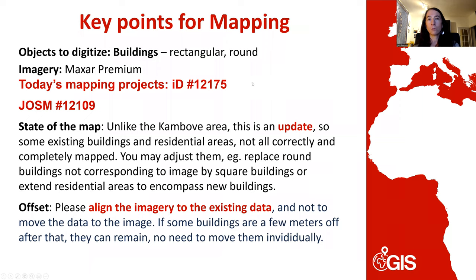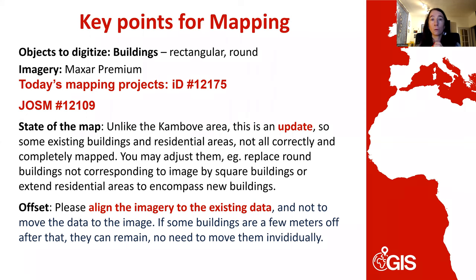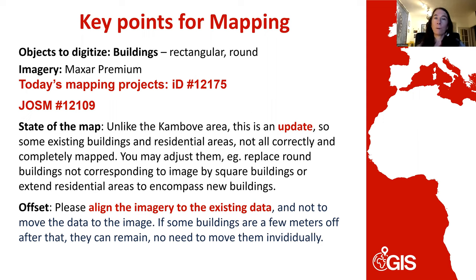A few key points for the mapping: we are going to digitize buildings, which are both rectangular and round in this area. The imagery we're using for the background is Maxar Premium — the newest available, from about 2020. That's why we tasked new imagery for part of the Angumu area that was covered by clouds. For Kambave, there should not be any existing buildings on the map since it's a very rural area where we are doing an exploratory assessment in contact with local communities.